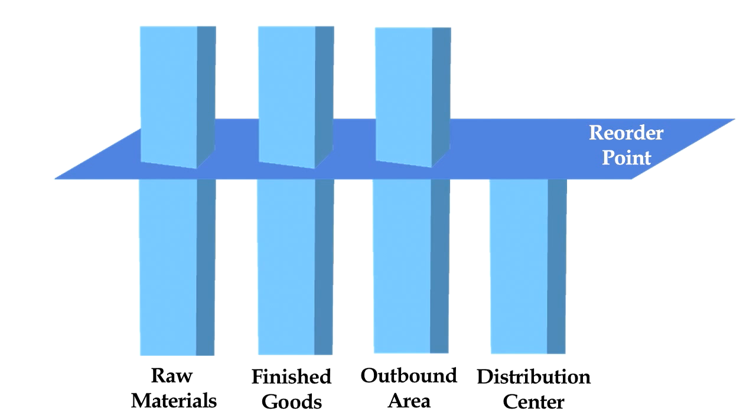The dispatch from the outbound area is captured by handheld in real time. This data capturing can also be done through RFID or barcode-enabled systems, thereby automating the complete process. Now the inventory in the outbound system has gone down, thereby triggering replenishment tasks from the storage area.